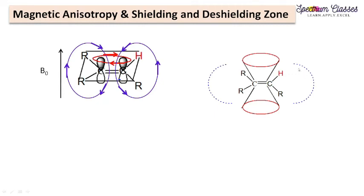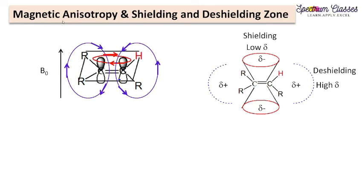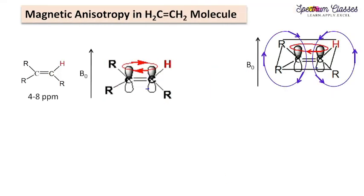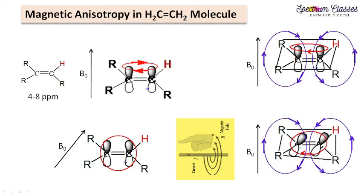A proton placed in that region resonates at a lower chemical shift value — low ppm. This can be represented by two cones: the deshielded zone (delta plus — higher delta value) and the shielded cone (delta minus — low delta value). The proton present outside the shielded zone resonates at higher delta value because of this magnetic anisotropy effect. As further given in Clayden's book, the direction of this shielded zone is at a 36-degree angle defining the shape of the cone.